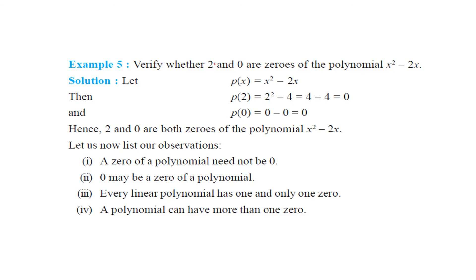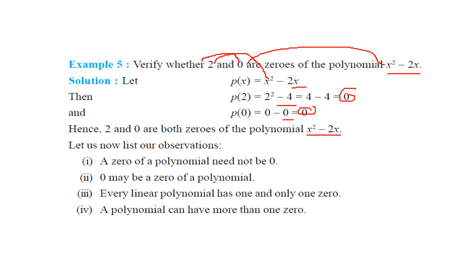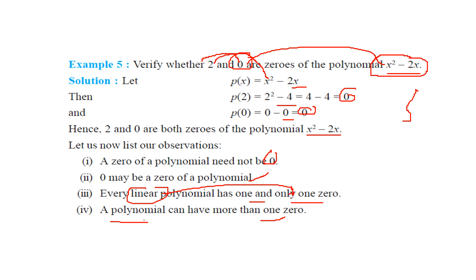We have to verify whether 2 and 0 are zeros of x squared minus 2x or not. Let us put 2 here: 2 squared minus 2 into 2 is 0. Again put 0: 0 squared minus 2 into 0 is 0. So both are zeros of this polynomial. In the linear case, we got only one zero. But here, for this quadratic or binomial expression, we observe that a polynomial can have more than one zero. Every linear polynomial has one and only one zero, but a polynomial can have more than one zero.